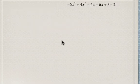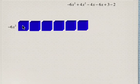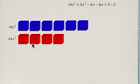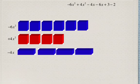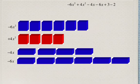So what we're going to do now is take a look at this question, and once again, we're going to look at representing these with algebra tiles. So negative 6x squared — remember that blue represents negative, and that the cubes are the x squared. So six of these cubes each represent negative x squared, or negative 1x squared. And positive 4x squared is going to be represented by four red cubes. Negative 4x is going to be represented by four blue rectangular prisms. And negative 6x is going to be represented by six blue rectangular prisms. Positive 3 is going to be represented by three red squares, and negative 2 is going to be represented by two blue squares.